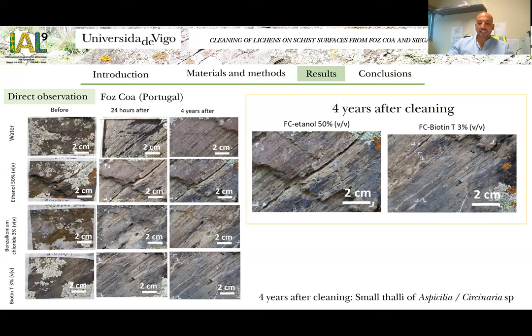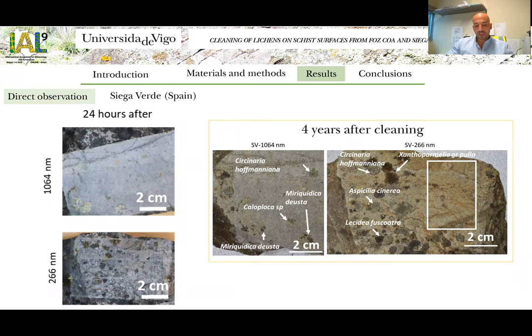In Foscoa surfaces, the results were similar to those detected in Ciegaverde. It is important to highlight that during the cleaning, as the schistosity planes of this wall were perpendicular to the surface, the mechanical action by the brush induced an intense dragging of the earth between planes. And after four years, it was possible to observe, with a detailed study of the surfaces, a small tally of Aspicilia and Circinaria, mainly in the fissures that started to open after the cleaning.